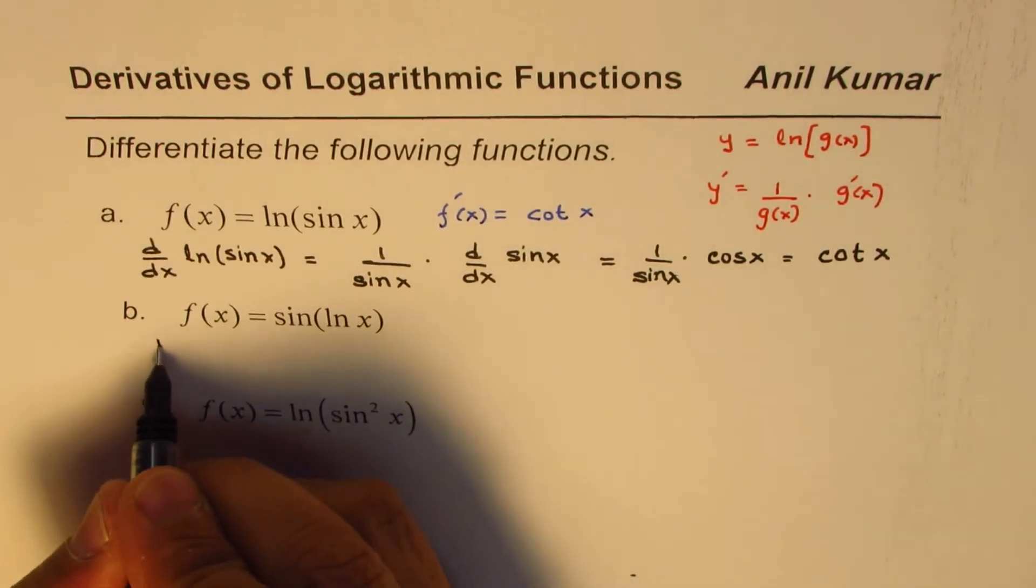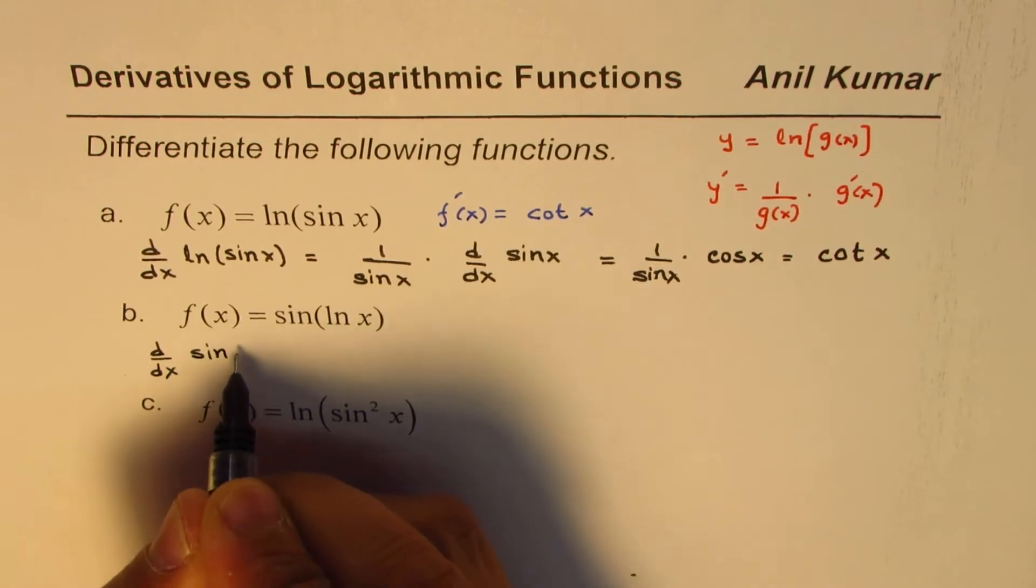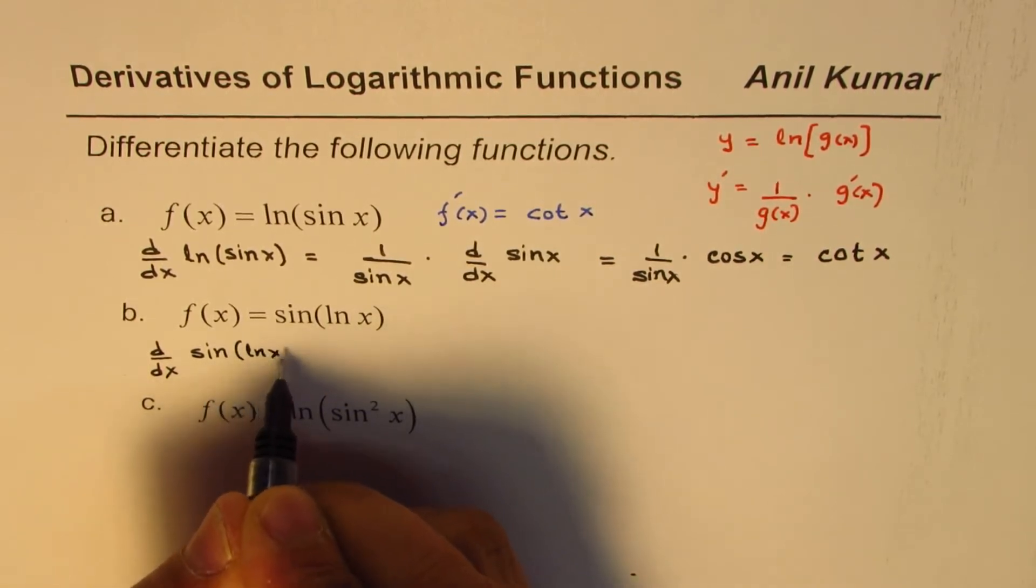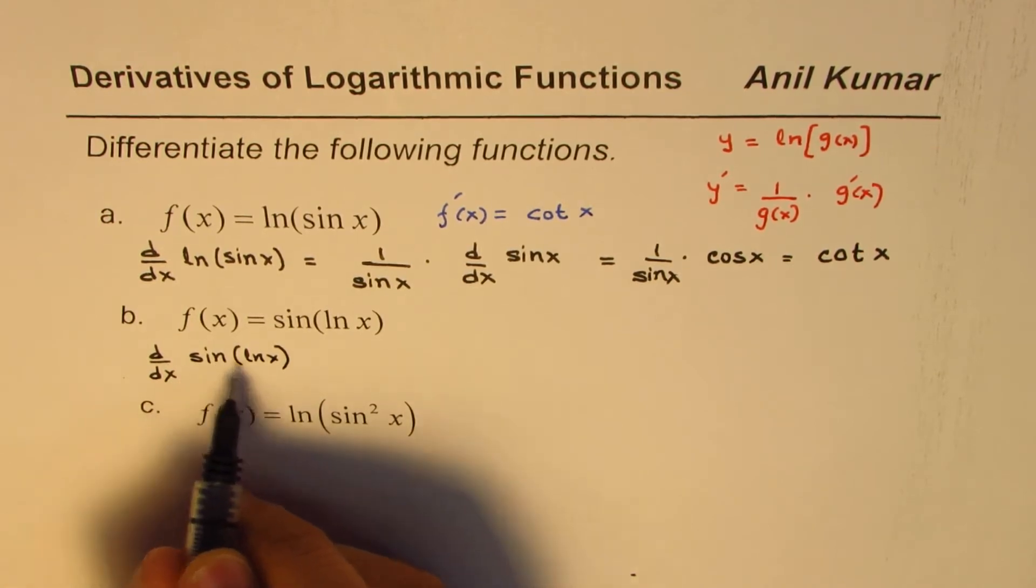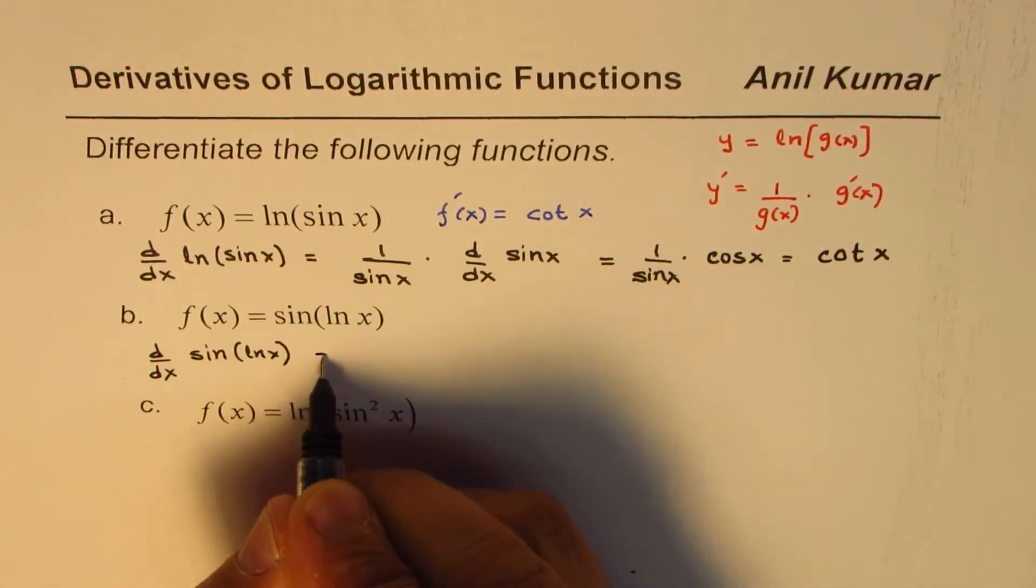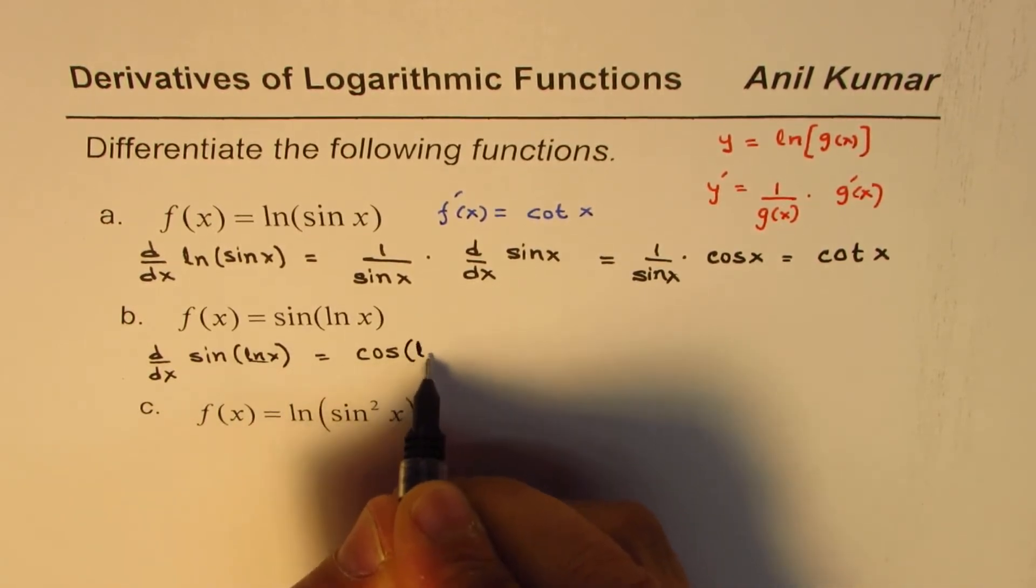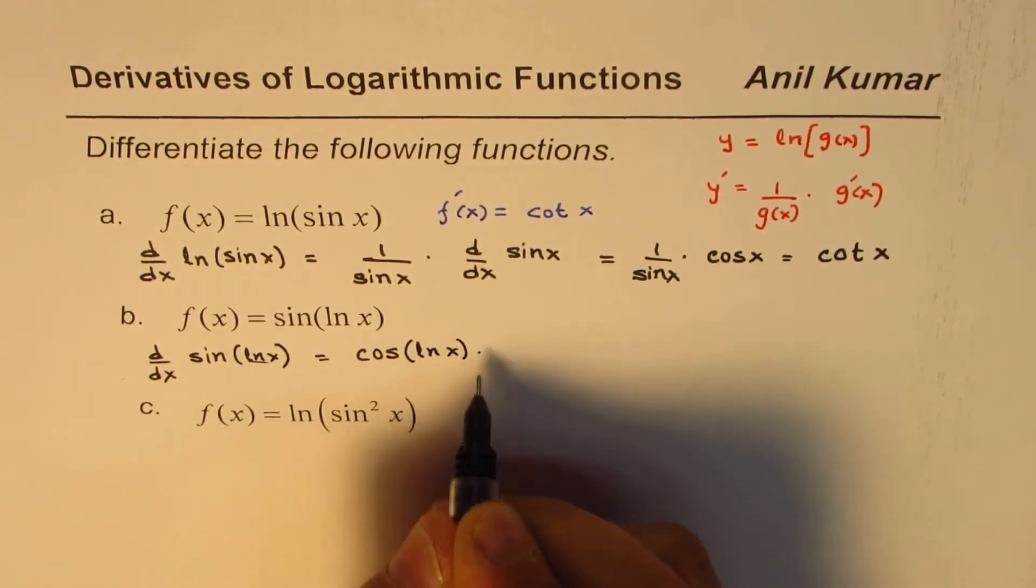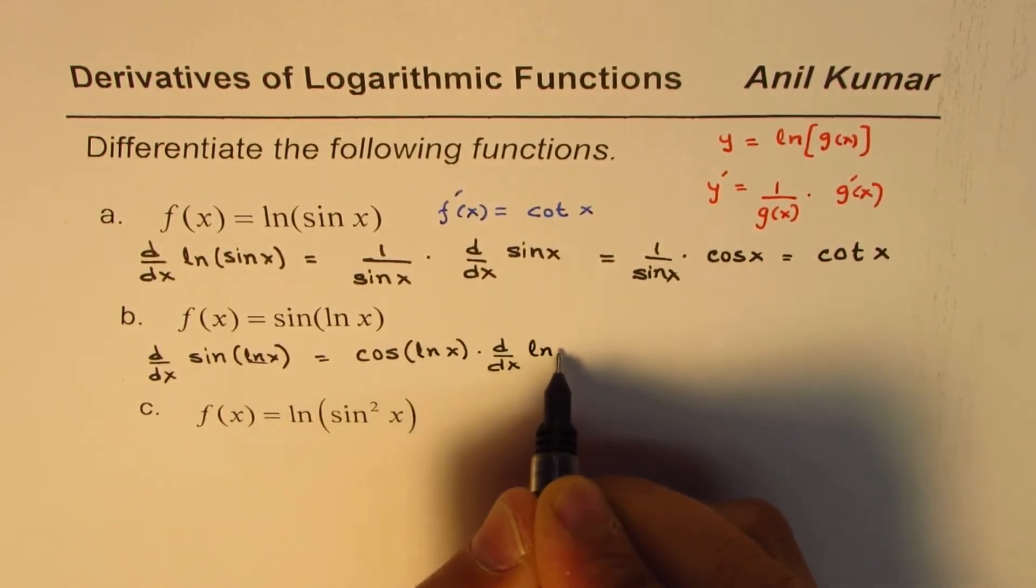We need to find derivative for sine of ln x. Now that means derivative of sine, sine x will be equal to cos x. x in this case is ln x times derivative of inside function which is ln x.